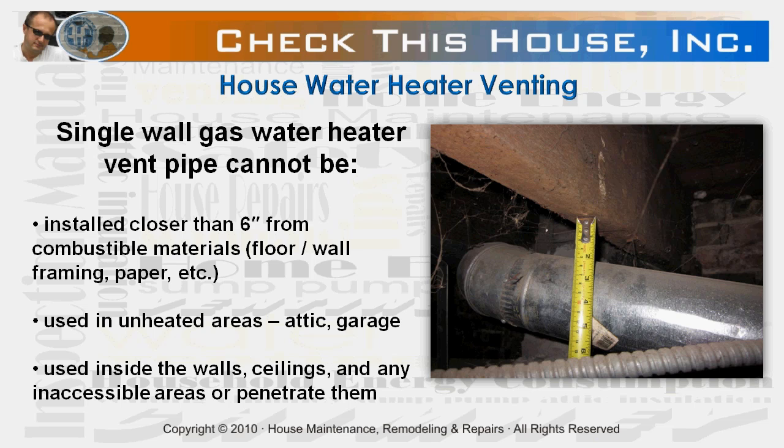Number two: single wall gas water heater vent pipes cannot be used in unheated, unconditioned areas like attic, garage, or crawl space, even if only partially penetrating that space. Such installation will cause excessive condensation on vent pipe walls and compromise proper drafting. Double wall B vent pipe is required for those applications. And number three: single wall gas water heater vent pipe cannot be used inside walls, ceilings, or any inaccessible areas. Again, double wall type vent pipe — B vent — must be installed in those cases.